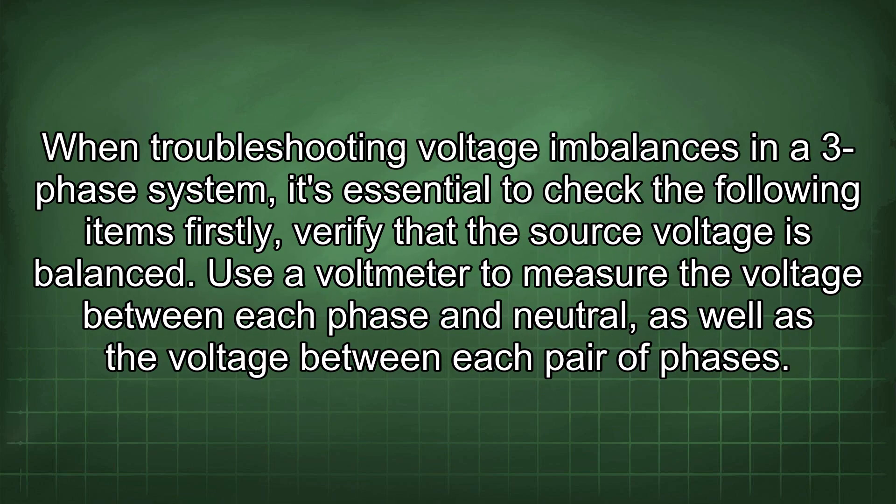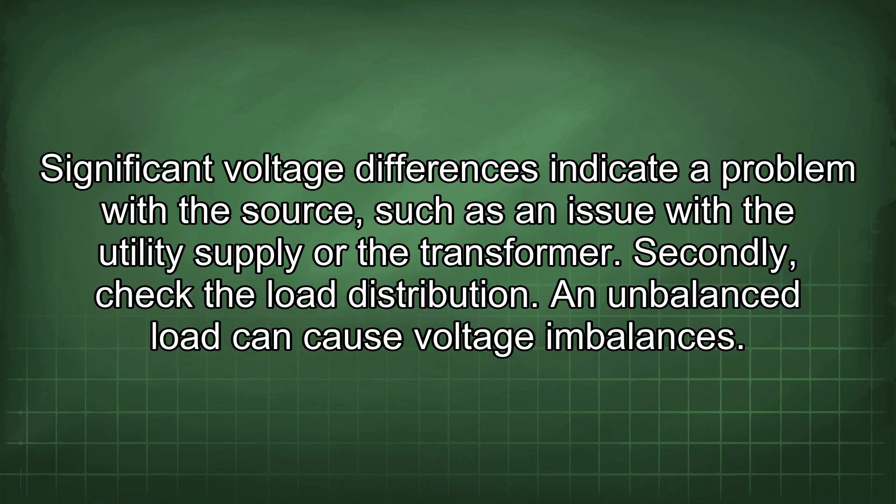When troubleshooting voltage imbalances in a 3-phase system, it's essential to check the following items. First, verify that the source voltage is balanced. Use a voltmeter to measure the voltage between each phase and neutral, as well as the voltage between each pair of phases. Significant voltage differences indicate a problem with the source, such as an issue with the utility supply or the transformer.